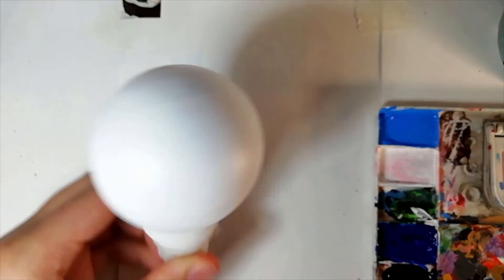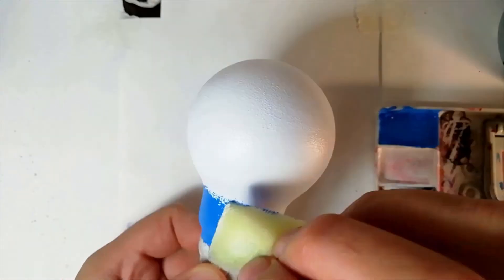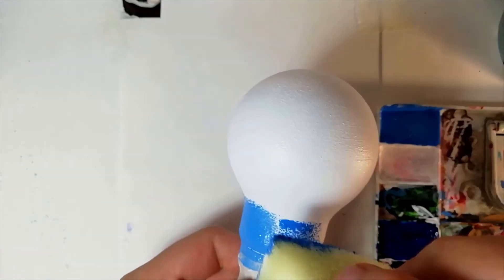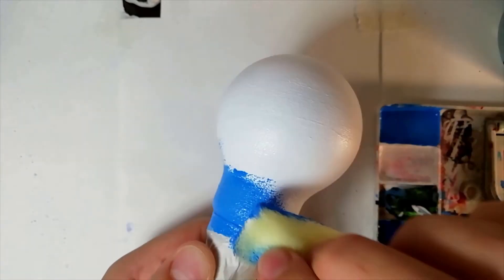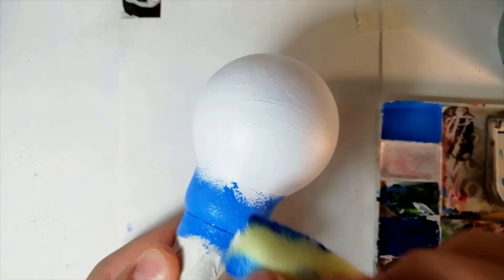The next step is to start adding color to the bulb. Unlike my previous bulb video, I wanted to create a gradient of color for the background rather than just starting with a flat base color and adding to it. The idea for this bulb is that the top of the bulb is the night sky with stars on it.